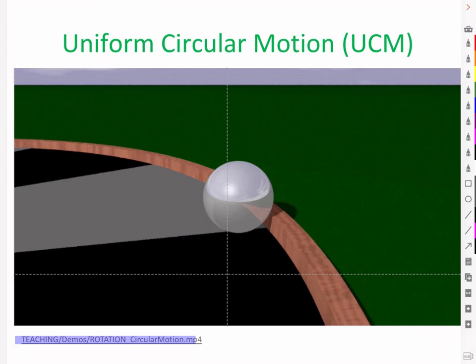Here is one of my favorite animations for demonstrating uniform circular motion, because it shows all the vector quantities and how they arise. You don't need to know how to derive these, but it is important to understand the directions and meanings of these vectors.